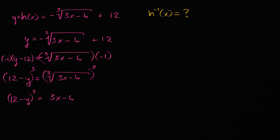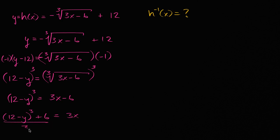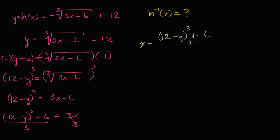Now we want to solve for x. Let's add six to both sides, so we get 12 minus y cubed plus six is equal to three x. Now we could divide both sides by three, and we're all done. Divide both sides by three, and we get x is equal to 12 minus y to the third power plus six, all over three.